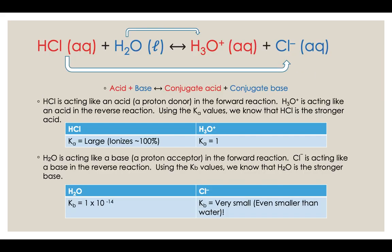If we take hydrochloric acid and put it in water, hydrochloric acid is acting as a proton donor in the forward reaction, donating a proton to the water and turning the water into H3O+. The water is acting like a base, a proton acceptor. After the hydrochloric acid donates its proton, it turns into chloride ions — the conjugate base of our strong acid. So both hydrochloric acid and H3O+ are acids.